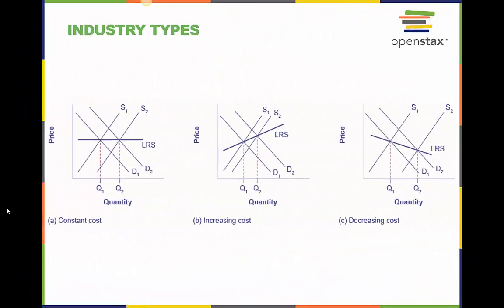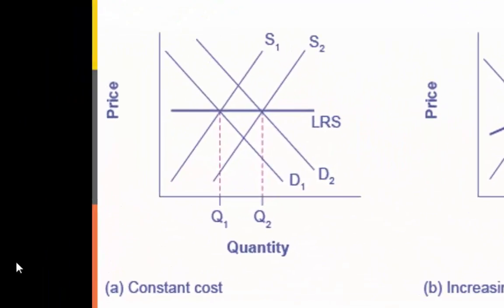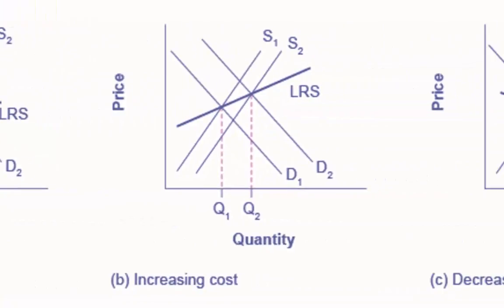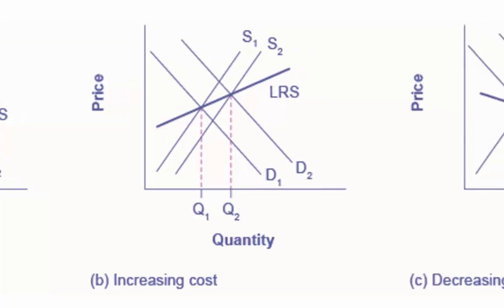In the long run, we can also see different trends in industries leading to disruption in markets. In the graph on the left, demand increased and supply met it. Notice that the supply increase is equal to the demand increase. The result is that the equilibrium price stays the same as quantity sold increases. This is called a constant cost industry. In the middle graph, notice that sellers were not able to increase supply as much as demand. Some inputs were scarce or wages were rising. The equilibrium price rises. This is called an increasing cost industry.